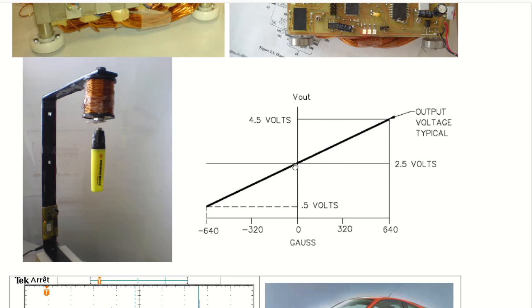And it gives you a voltage around 2.5 volts if you have zero flux density. And if you have a positive one, it will come up to 4.5 volt. If you have a negative, so it's seeing a south, it will go down to 0.5 volt. So it's linear.